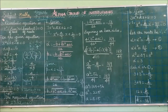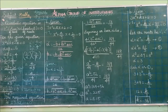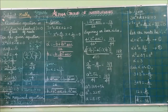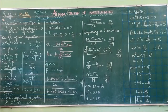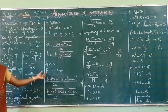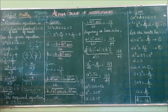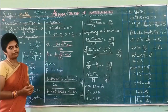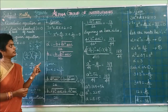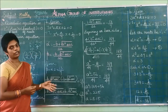Now listen to the fourth question. Everybody look at page number 122, fourth question. If alpha and beta are the roots of 7x² + Ax + 2 = 0, and beta minus alpha = −13/7, find the value of A.